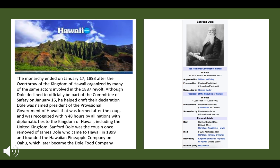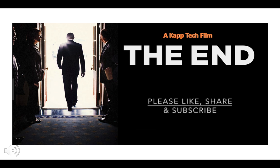Depending on exactly where we draw the line, we also have Sanford Dole — a relative of the man who started the Dole Food Company — who was president of the Republic of Hawaii before it joined the Union officially. So that's the end of this feature on the Forgotten Presidents. Please like, share, and subscribe. I'd love to have you comment on our video as well. Thank you.